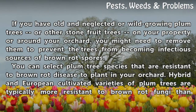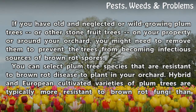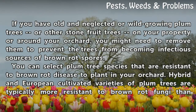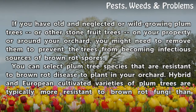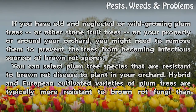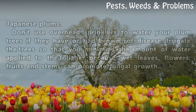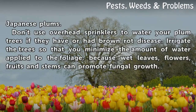You can select plum tree species that are resistant to brown rot disease to plant in your orchard. Hybrid and European cultivated varieties of plum trees are typically more resistant to brown rot fungi than Japanese plums.